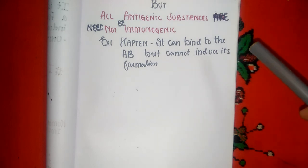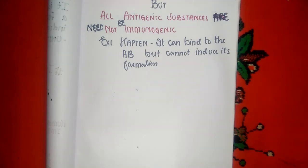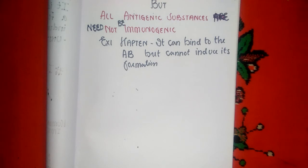For the second point — all antigenic substances need not be immunogenic. Take the example of a hapten, also referred to as a partial antigen. A hapten has the ability to bind to antibodies, but it cannot induce the formation of antibodies. Hence it has antigenic property, but it is not an immunogen because it does not induce antibody formation.